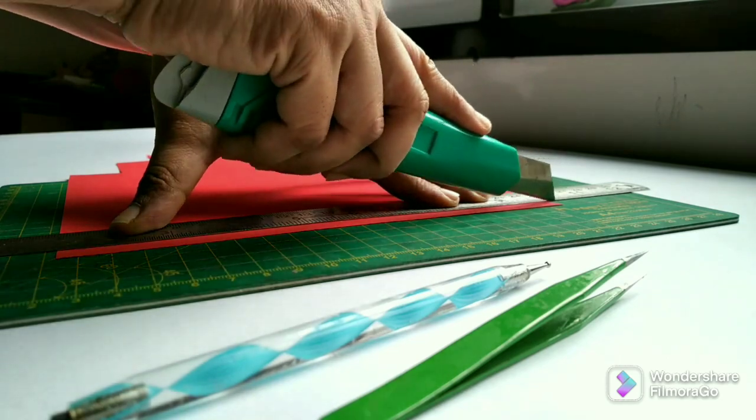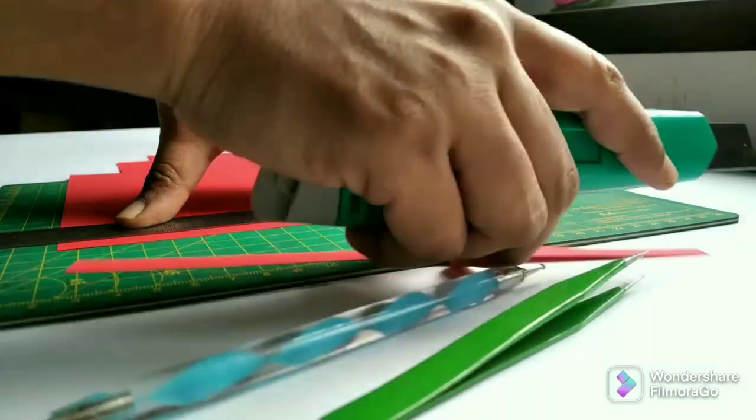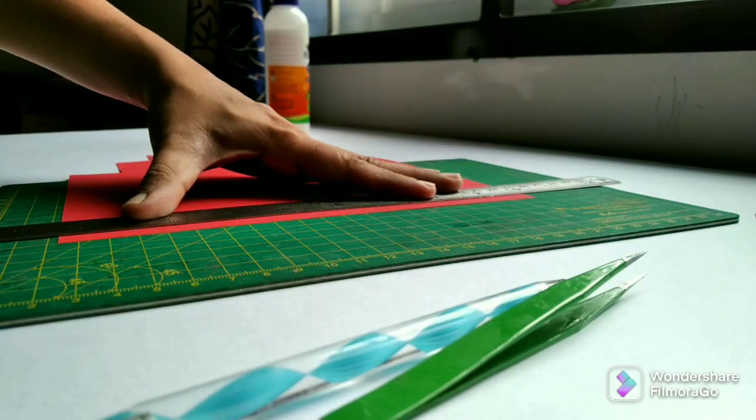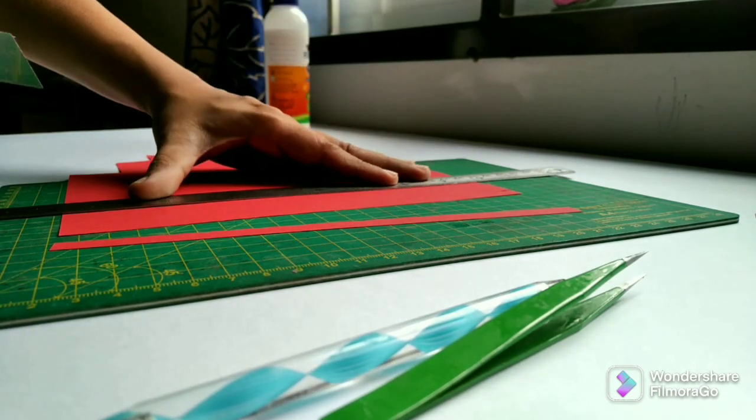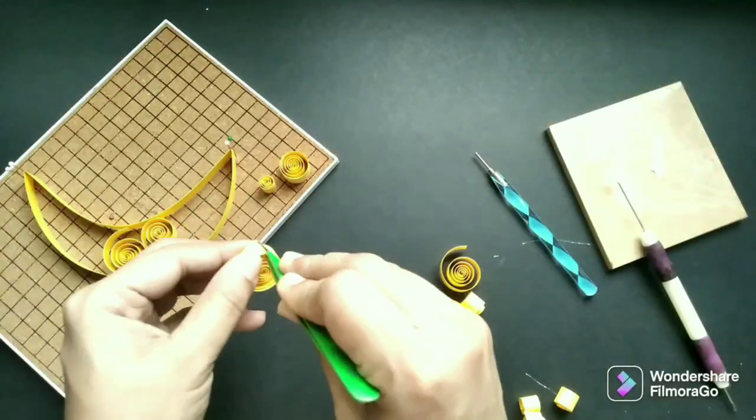So an 80 GSM thick paper makes a smaller tight coil than a tight coil made from 100 GSM thick paper. We can use this property to our benefit when doing bigger projects. Try to use cardstock or thicker paper so the work is easier and covers larger areas fast.